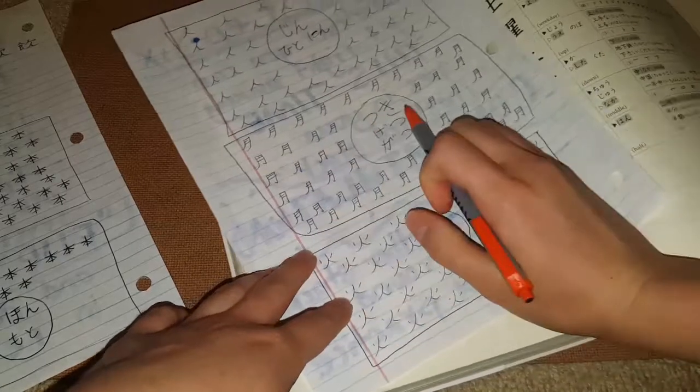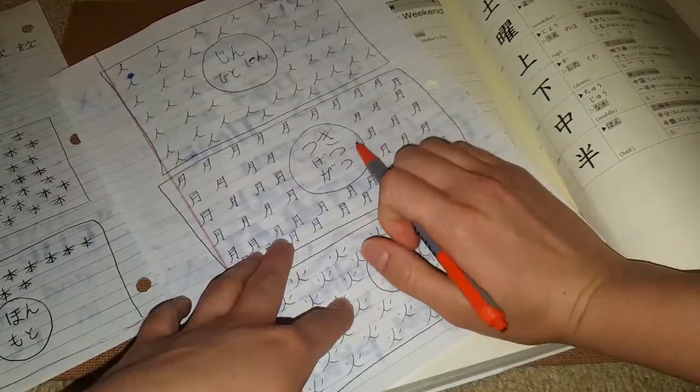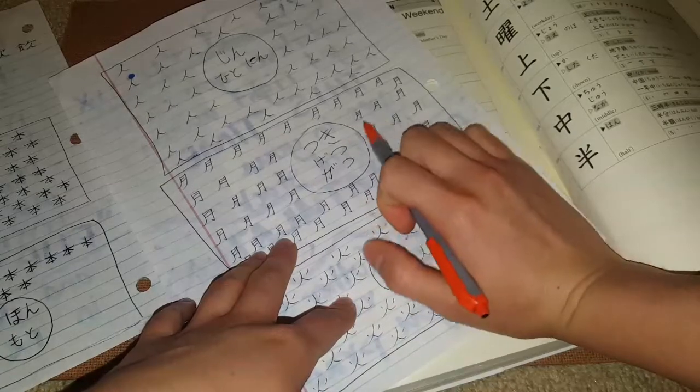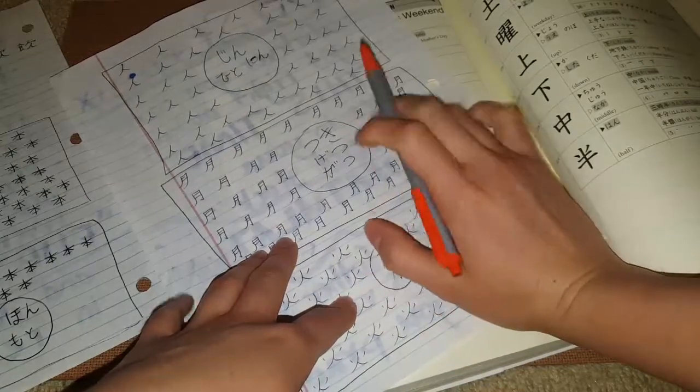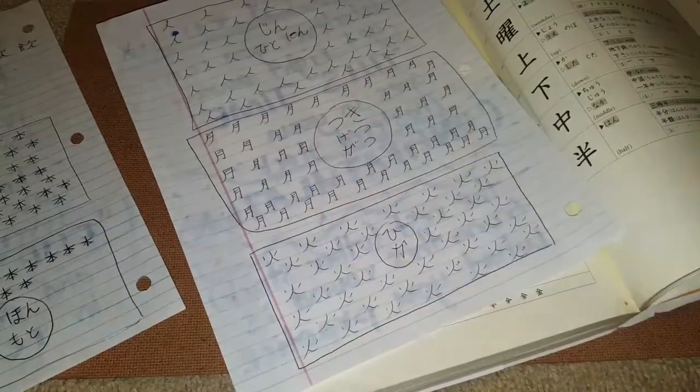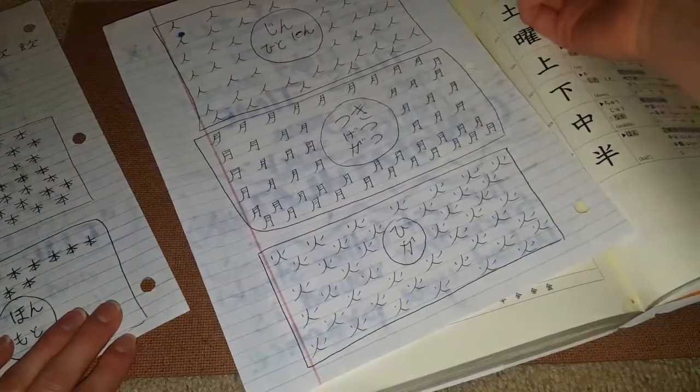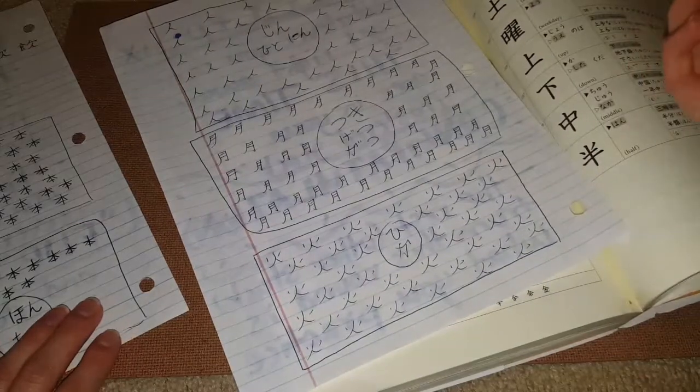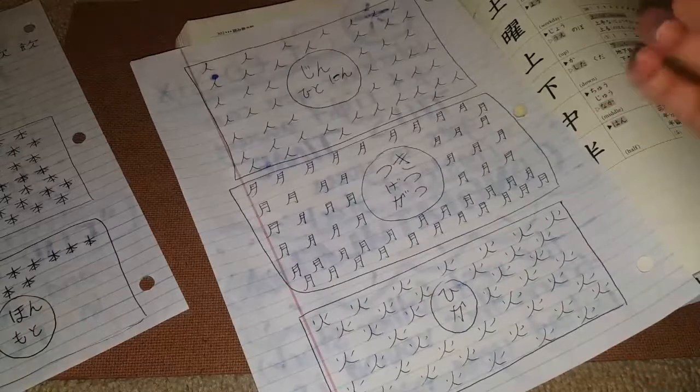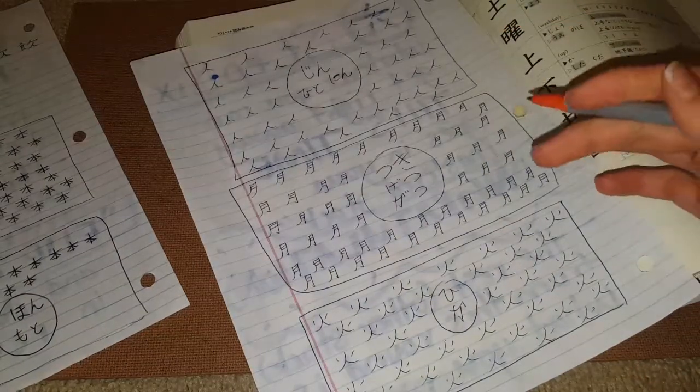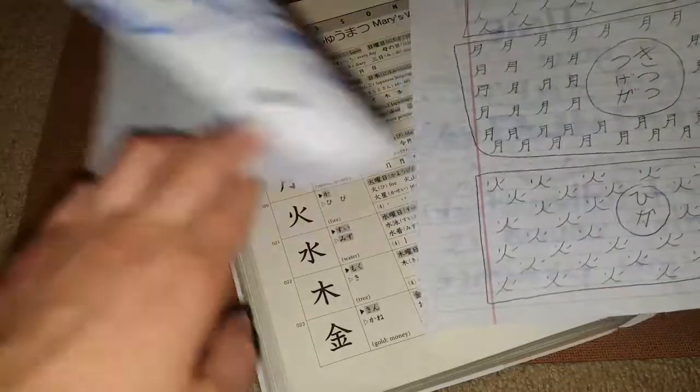Same thing for this one, tsuki. But also when you use it with other things, like a month. Usually when you're talking about dates, getsu, gatsu. Tsuki means moon. I already know what these mean. Like this is for person. This is moon. This is fire. I know what they mean. But for me, I was forgetting how to pronounce it and how to pronounce the readings. So this was my thing.